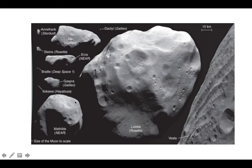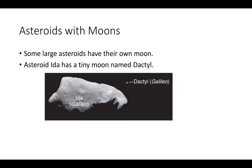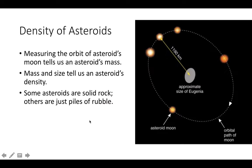Some asteroids actually have moons because they're large enough to have their own gravitational pull. The asteroid Ida has a small moon named Dactyl. Figuring out the mass and density of asteroids is difficult because we have to determine the gravitational effect they have on other objects. But if we can measure the orbits of an asteroid's moon, it can tell us the mass of that asteroid, and from there we can figure out density.